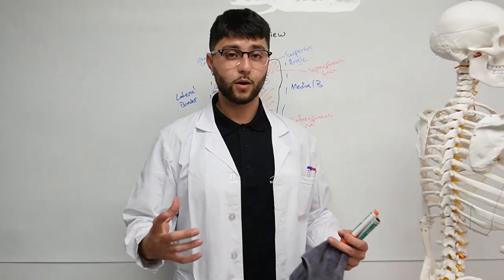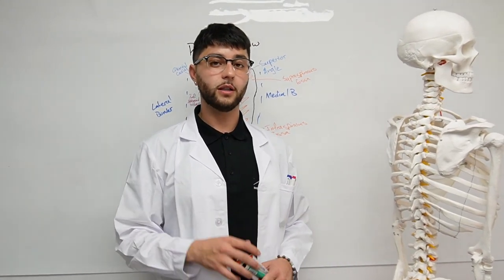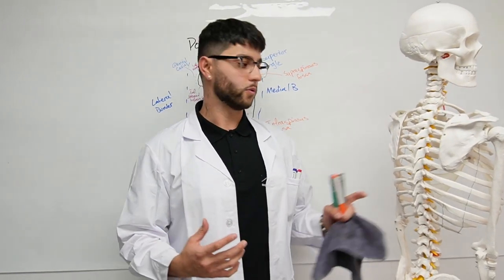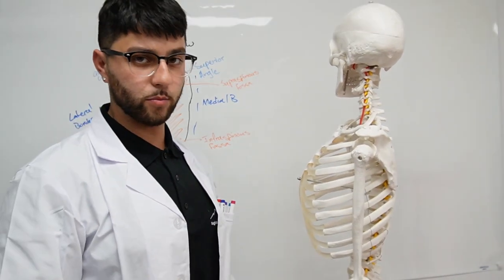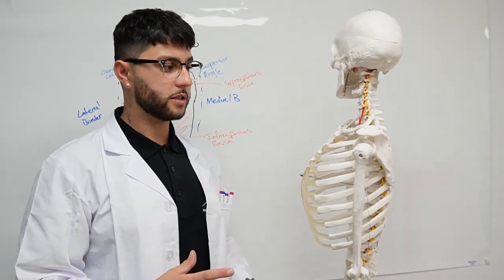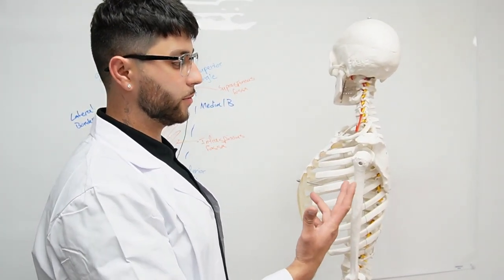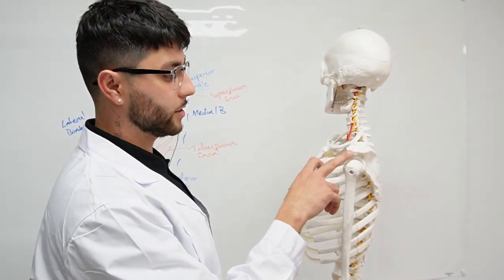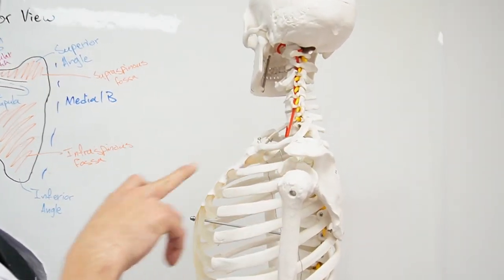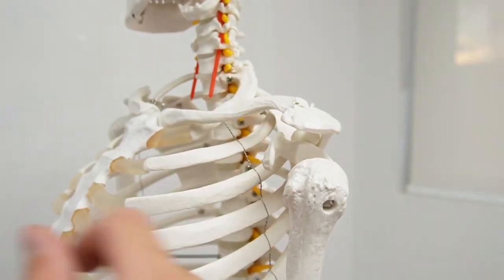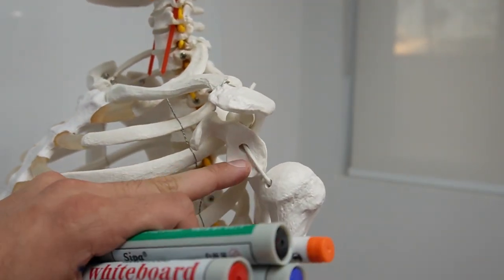So now we've got the posterior view. Let's look into the lateral view. The lateral view is very simple — you're not going to see too much, but you will see a couple of major points, which is the acromion process, the coracoid process, and then you've got the glenoid cavity.